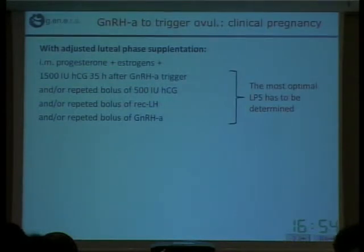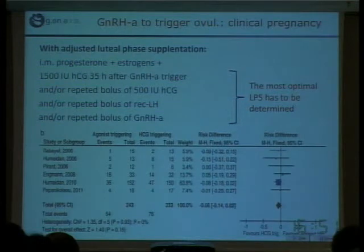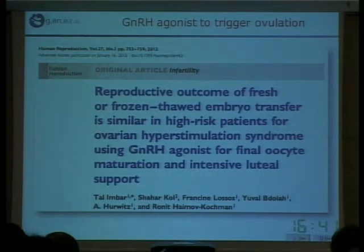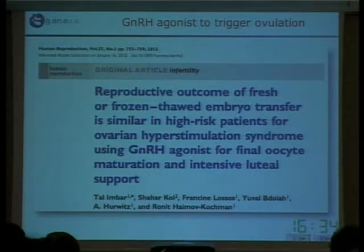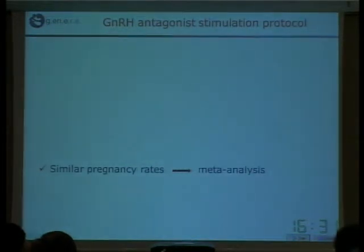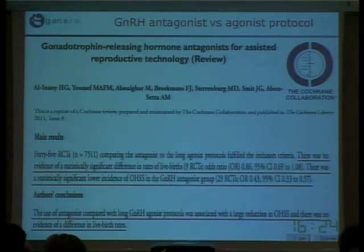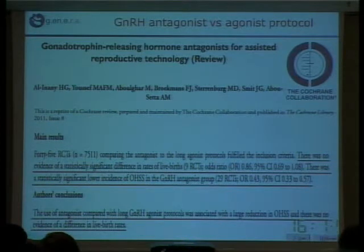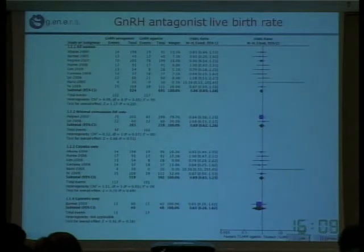Different luteal phase support approaches have been proposed, but so far the most optimal luteal phase support has yet to be determined. One strategy — and indeed the strategy we use — is to freeze everything: oocytes, embryos, or both, and then transfer on the subsequent cycle. It was claimed that these protocols lead to a lower pregnancy rate, but a very recent meta-analysis on 7,511 cycles demonstrates that the chance of having a live birth is absolutely comparable.